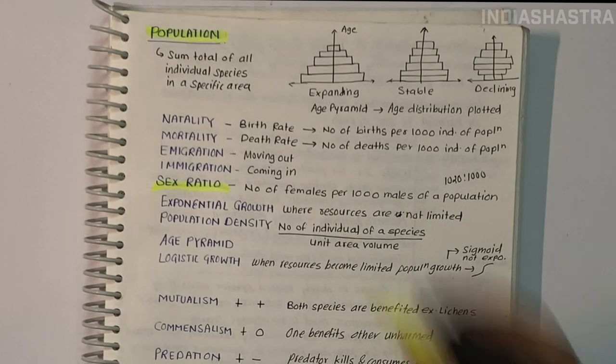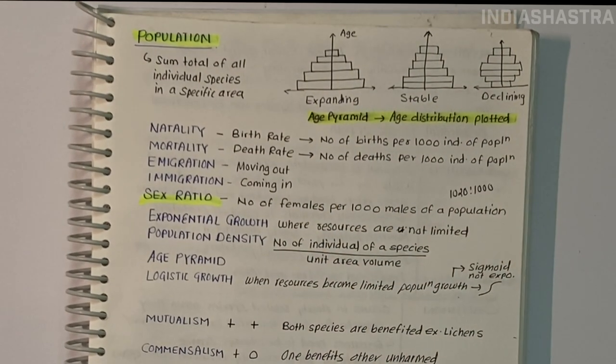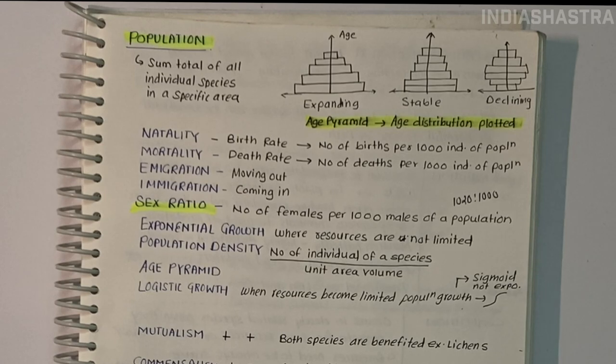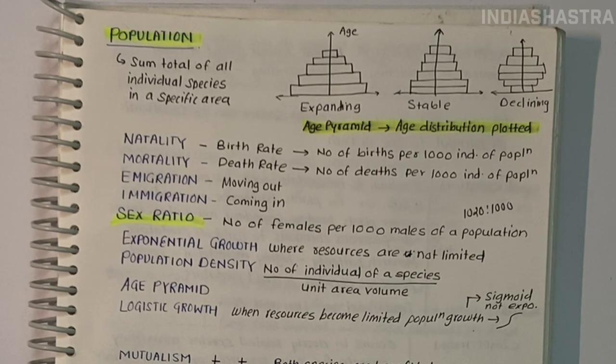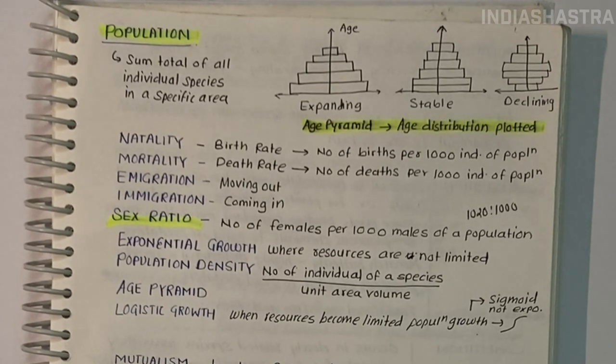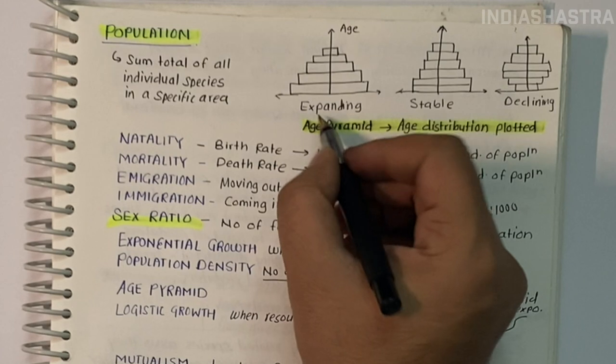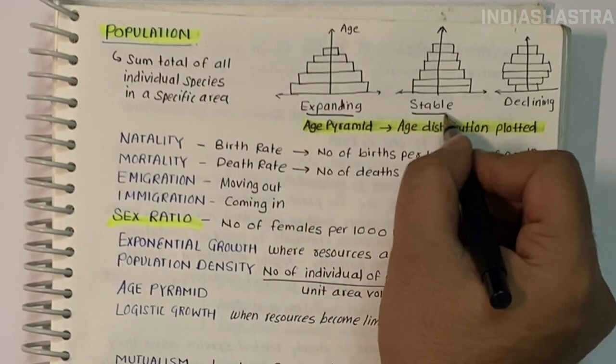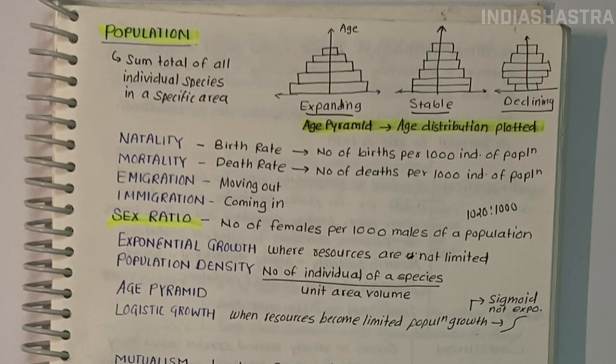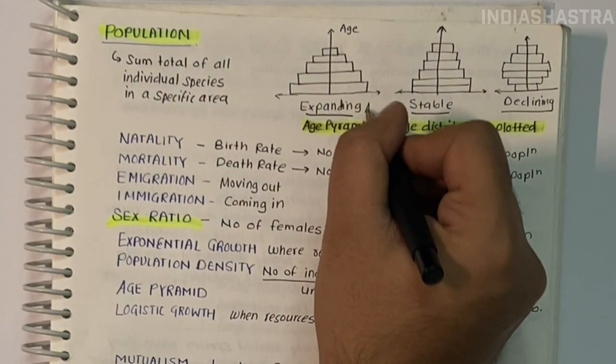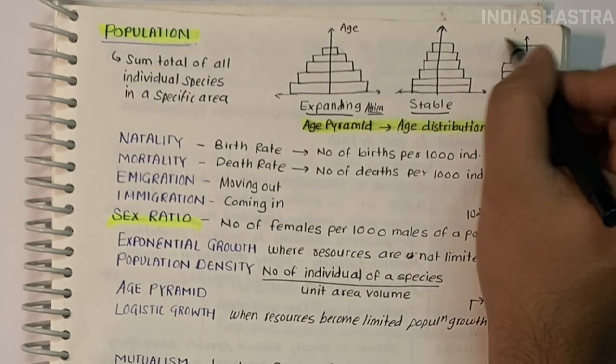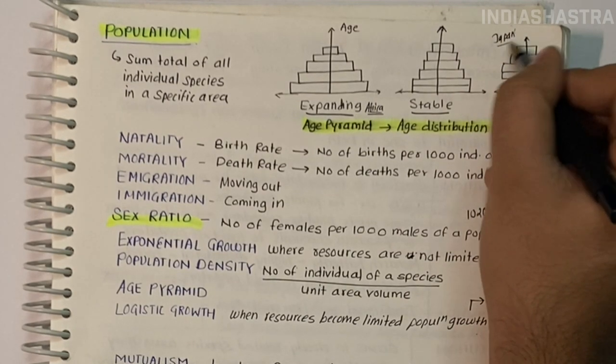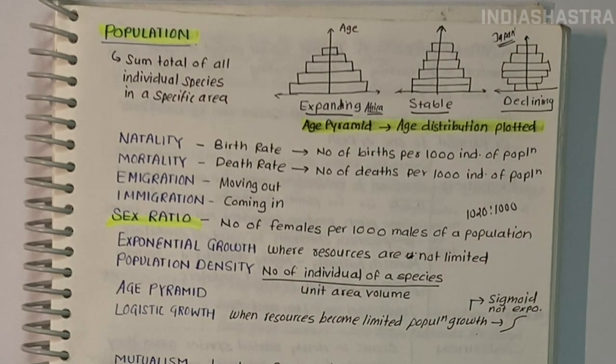Age pyramid: In a population, everyone is not the same age. If age distribution is plotted, the result is an age pyramid. The shape reflects growth status - whether growing, stable or declining. Most African countries have growing populations. Japan has a declining population pyramid.